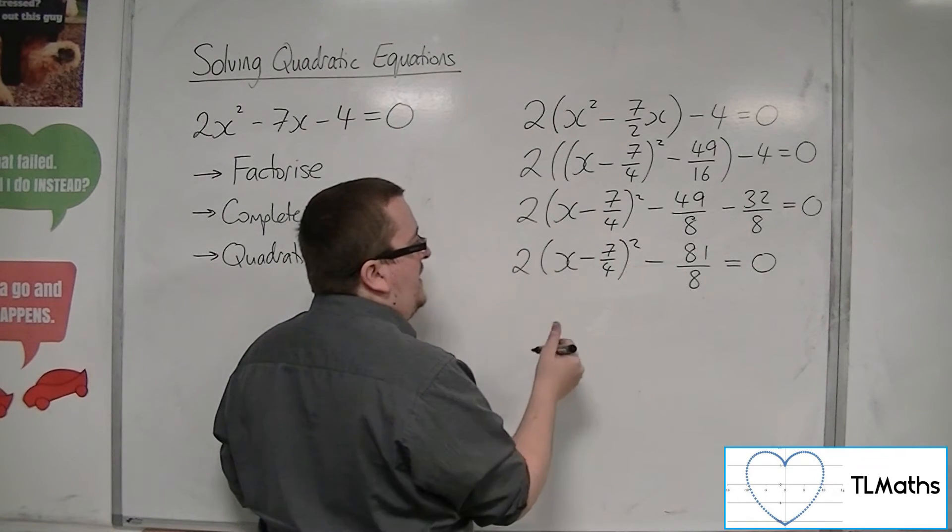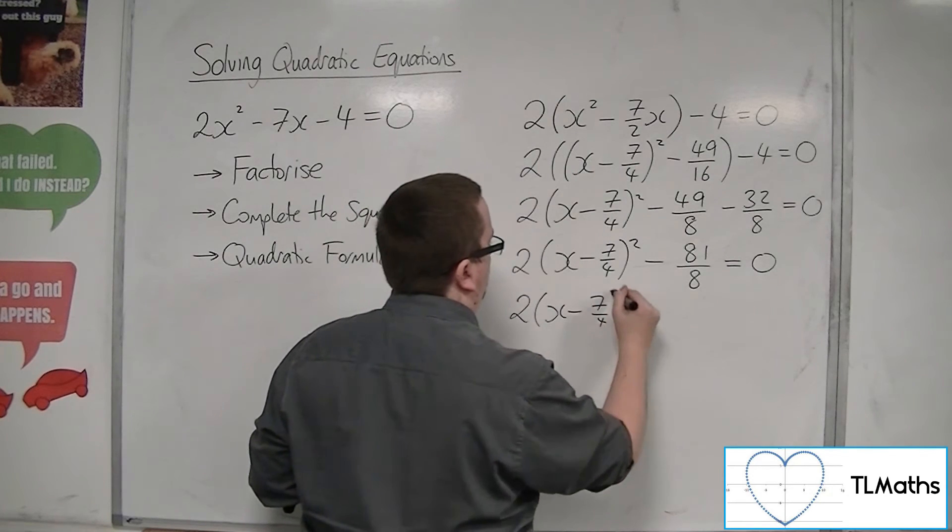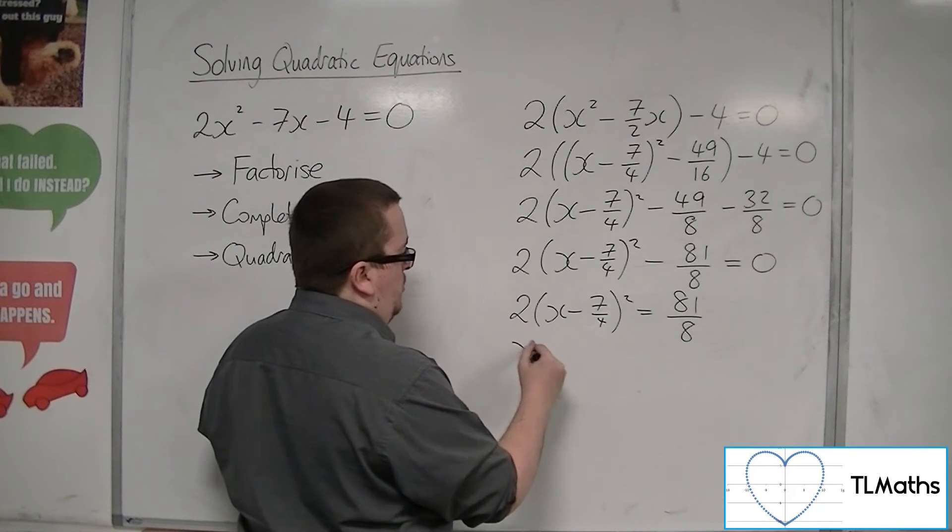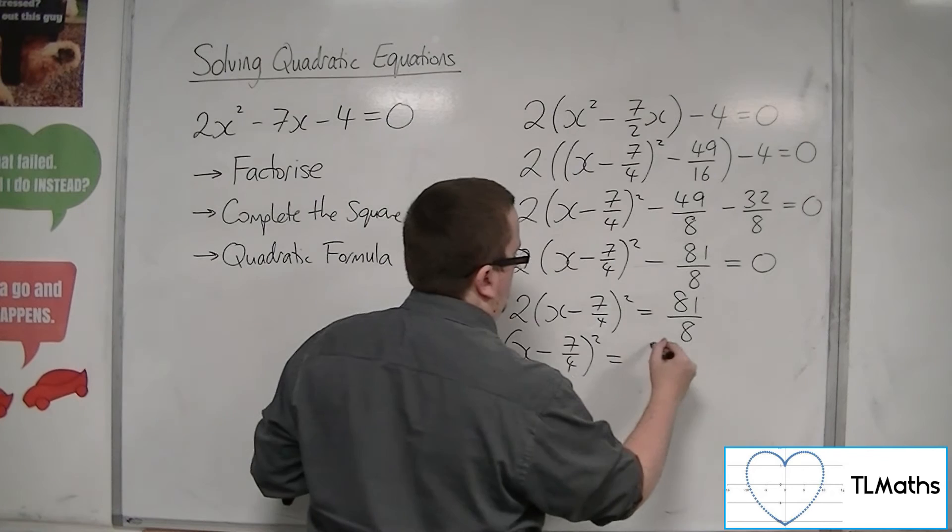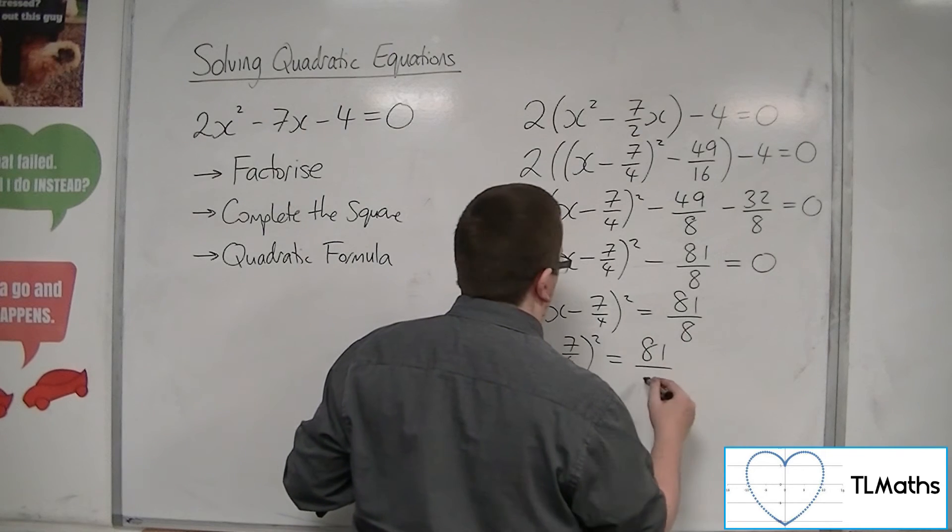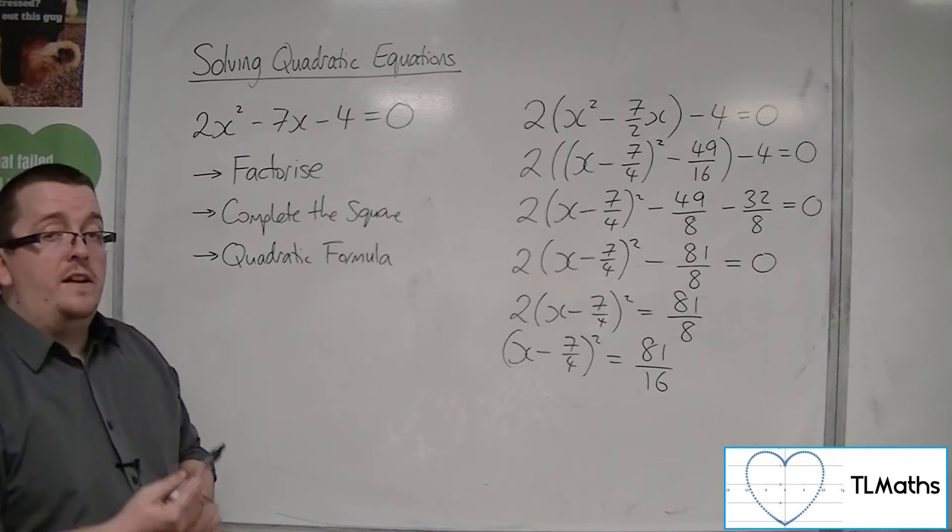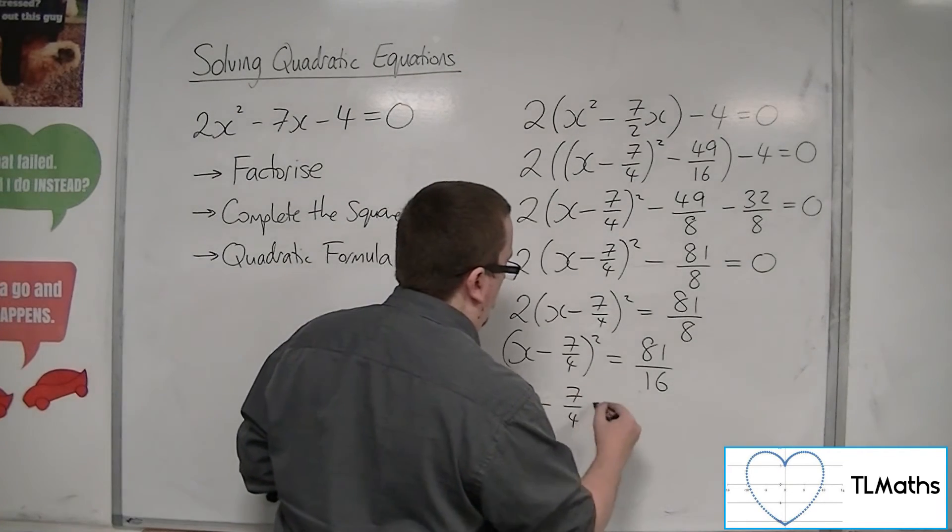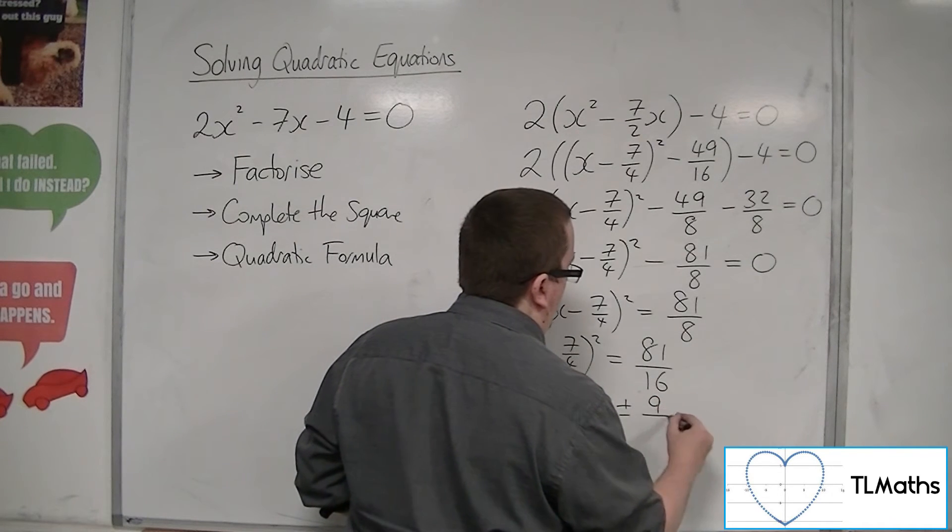Then add the 81 over 8 to both sides. Then I need to divide through by 2. So 81 over 8 divided by 2. Then I can square root both sides. So x minus 7 quarters equals plus or minus 9 quarters, square rooting the top and the bottom.